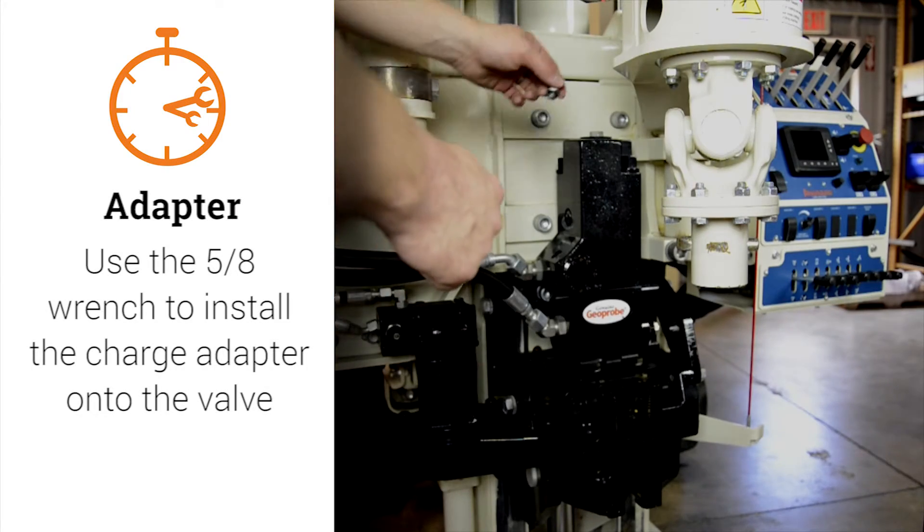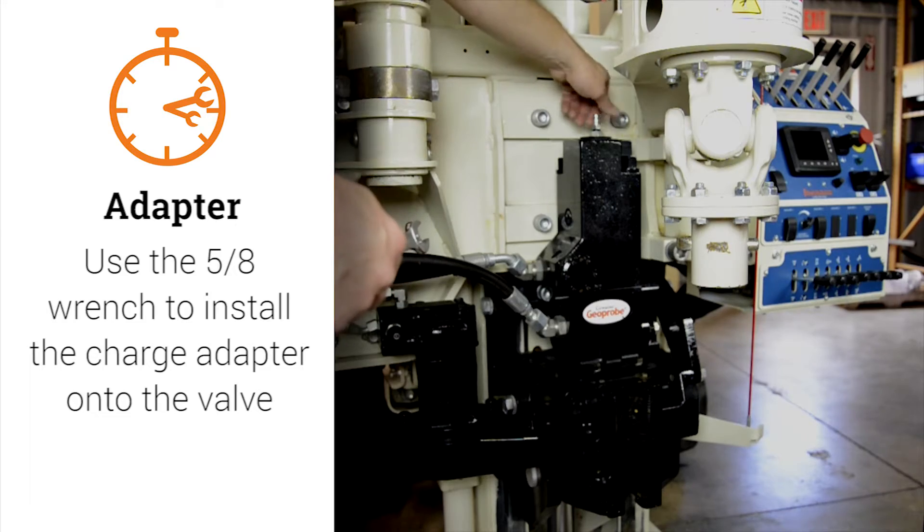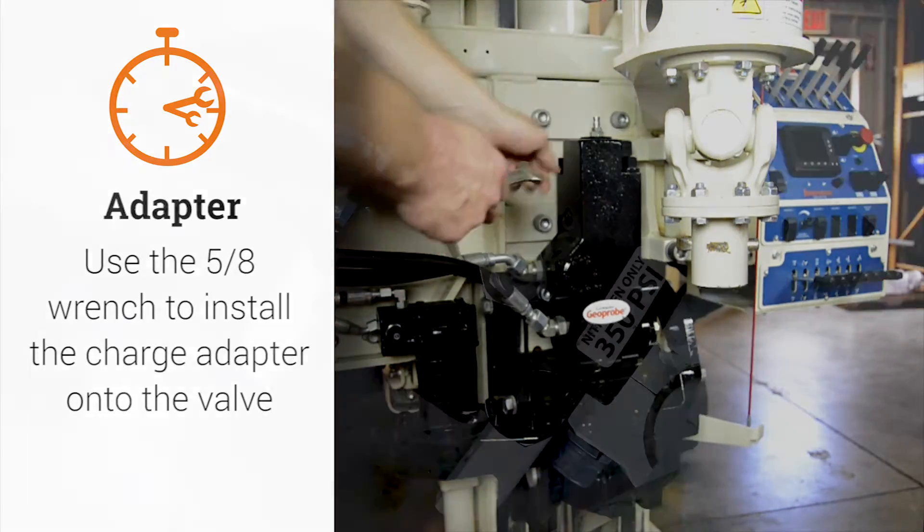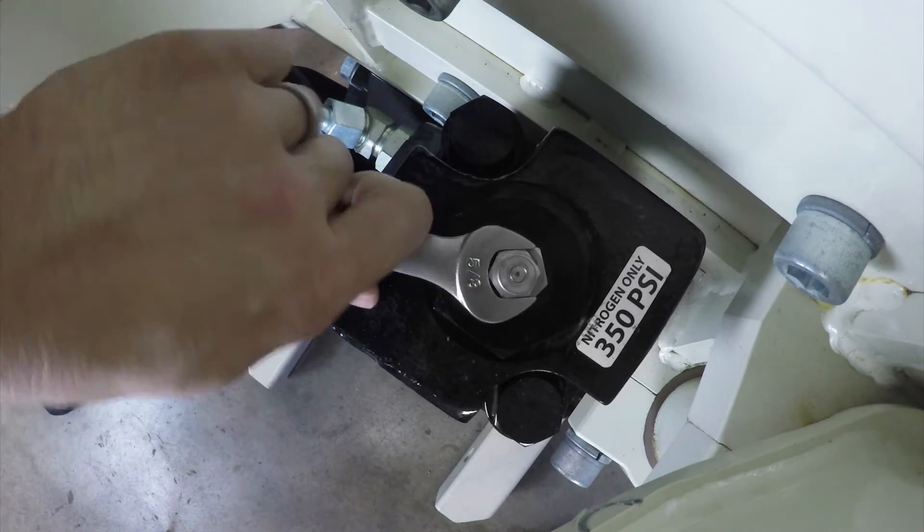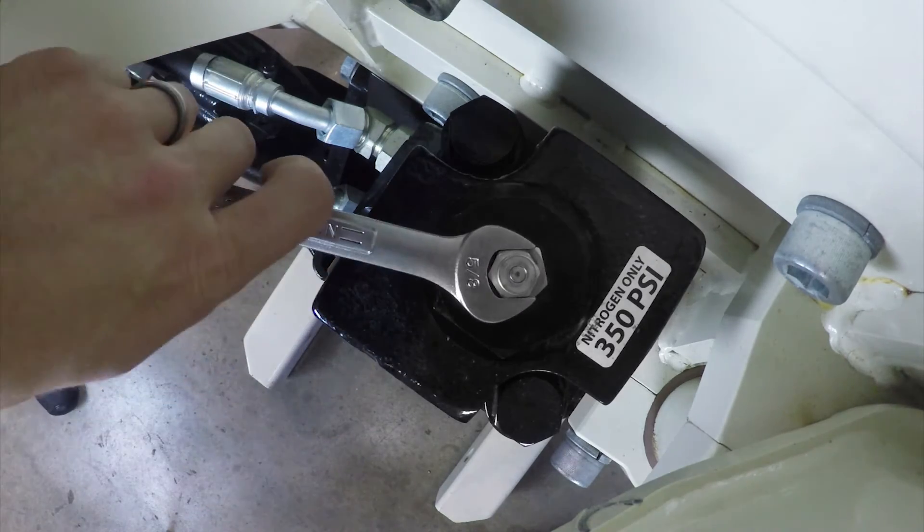Using your 5/8ths wrench, install the charge adapter onto the valve. Do not over tighten, you need to let the O-ring do the work. Just turn it until it stops.